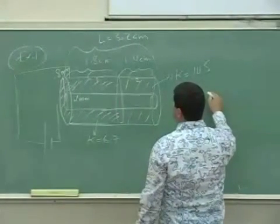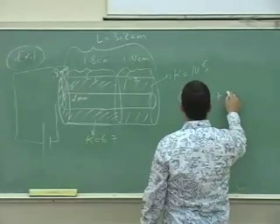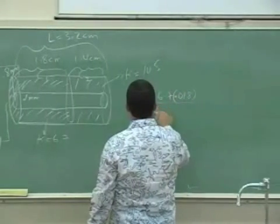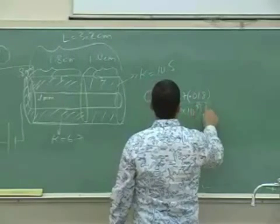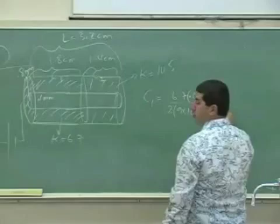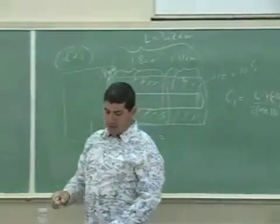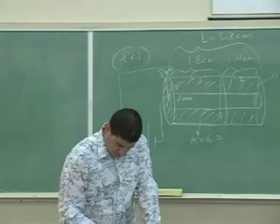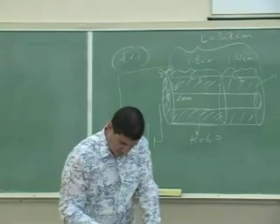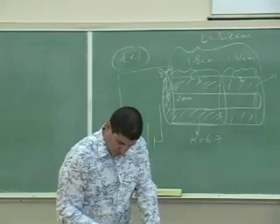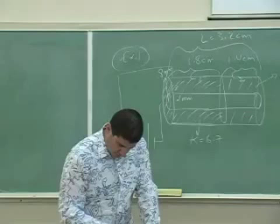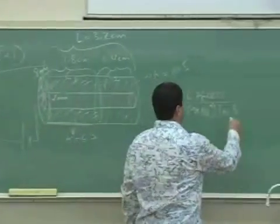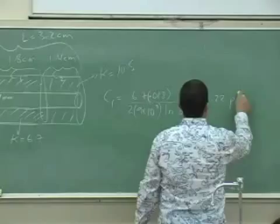That's going to be, kappa is going to be 6.7. The length is going to be 1.8 divided by 2k ln of 0.8 over 0.1, which was 8, right? Ln of 0.8. So that's going to be C1, 3.22 times 10 to the minus 12, so picofarads.